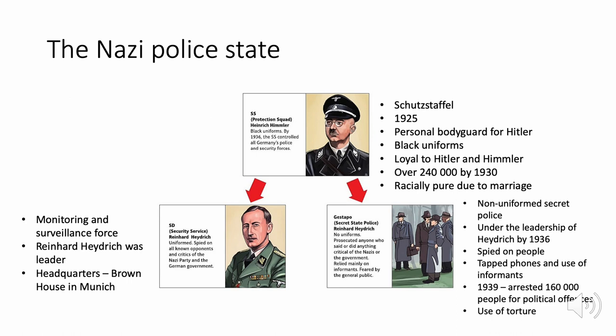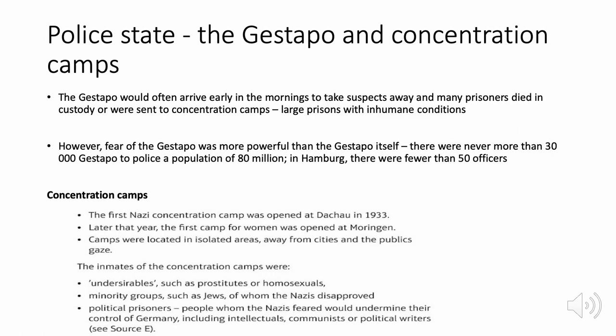The Gestapo's tactics were highly psychological — arriving early in the mornings to take suspects away. Many prisoners died in custody or were sent to concentration camps. Crucially, the fear of the Gestapo was more significant than the Gestapo itself — there were never more than 30,000 members, and in Hamburg there were fewer than 50 officers. Their non-uniformed, anonymous presence posed a psychological threat: people never knew who they were.